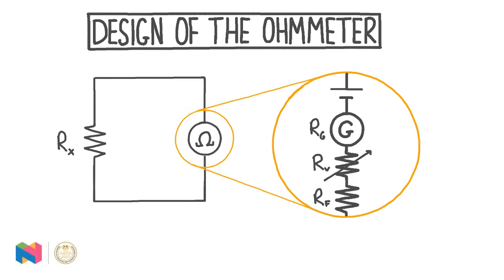In this video, we're going to be looking at the design of the ohmmeter. An ohmmeter is a device which is used to measure the electrical resistance of a component. In circuit diagrams, we can represent an ohmmeter with an uppercase letter omega in a circle. And in this circuit diagram, the ohmmeter is being used to measure the resistance Rx of a test resistor.